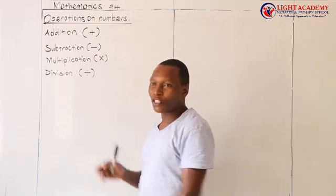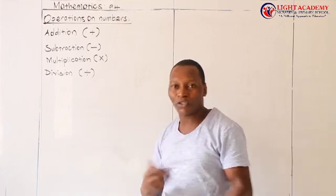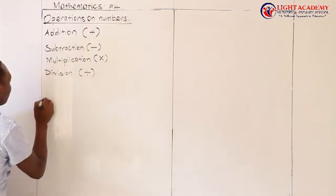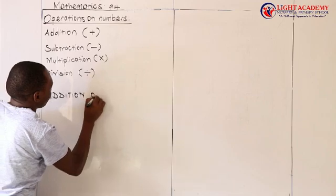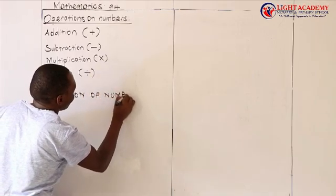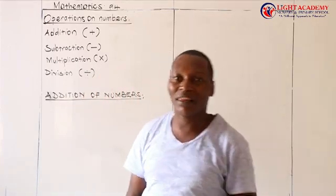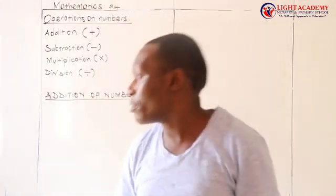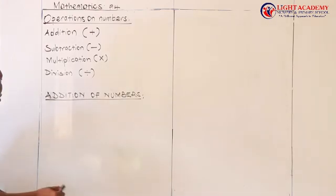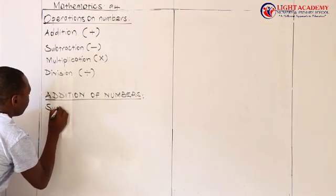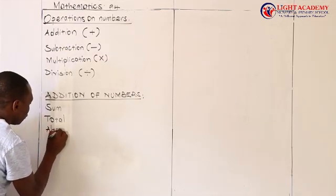For this lesson, I want us to draw our attention first to addition, which we have always been doing. So I will start from addition of numbers. When you look at the word addition, it has some sister words — other words we commonly use to mean addition. All along from primary 1, you can see those other words. The first one is 'sum.' We have another one as 'total.' And we have 'all together.'